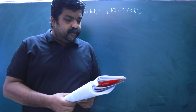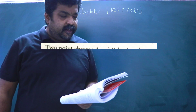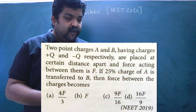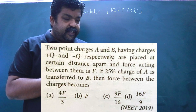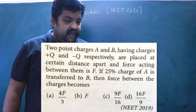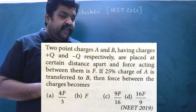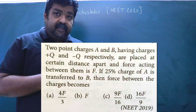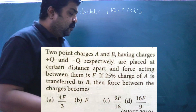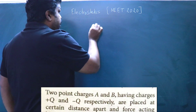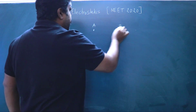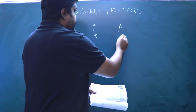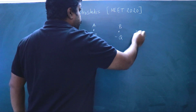Moving to the next question, also from NEET 2019: two point charges A and B having charges +Q and −Q are placed a certain distance apart and the force acting between them is F. If 25% of the charge from A is transferred to B, what is the new force between them?